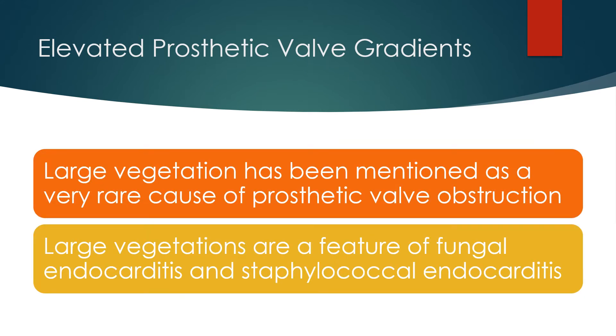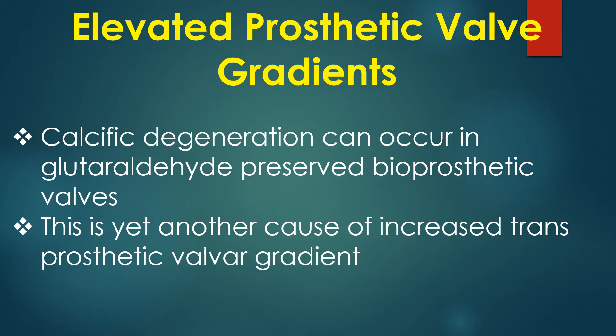Large vegetation has been mentioned as a very rare cause of prosthetic valve obstruction. Large vegetations are a feature of fungal endocarditis and staphylococcal endocarditis. Calcific degeneration can occur in glutaraldehyde-preserved bioprosthetic valves, and is yet another cause of increased trans-prosthetic valve gradient.